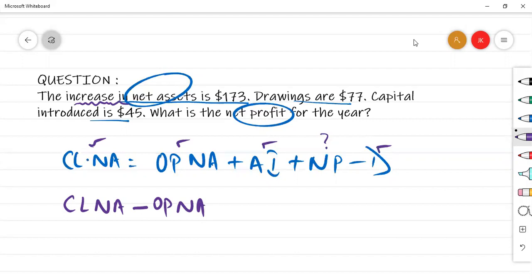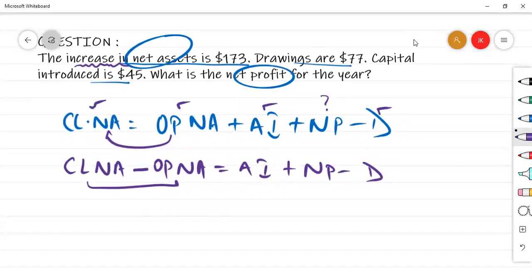The difference becomes the opening net assets plus and minus. Now, equation is equal. This means closing net assets minus opening net assets. The difference of these two is how much? This is $173, given to us. The difference is the increase. If it is the decrease then minus. So, closing net asset minus opening net assets, 173.